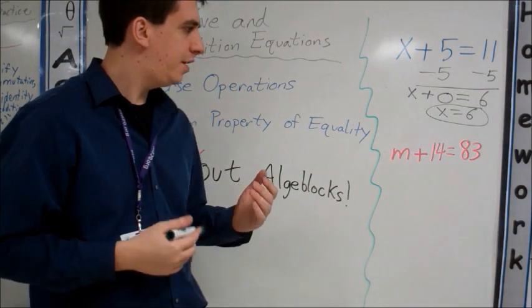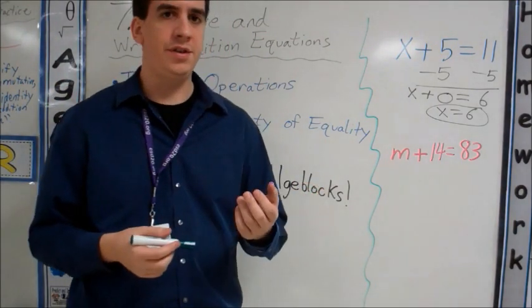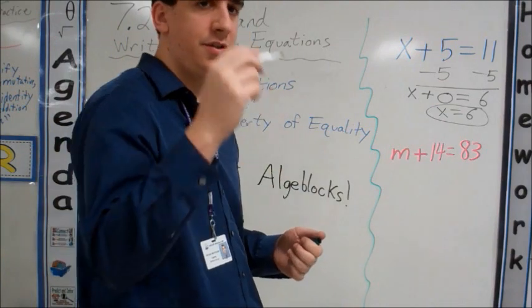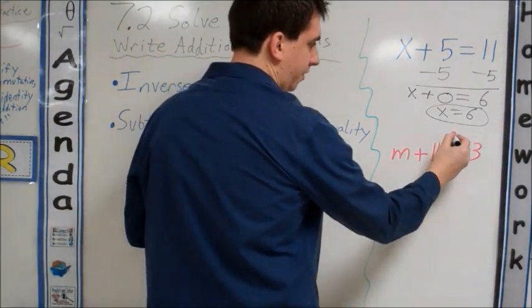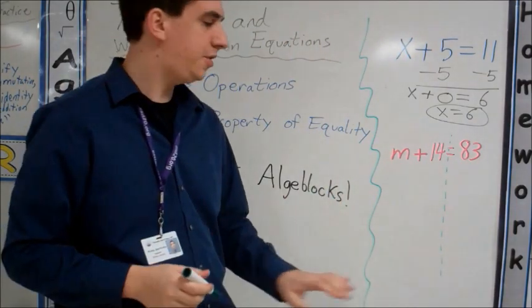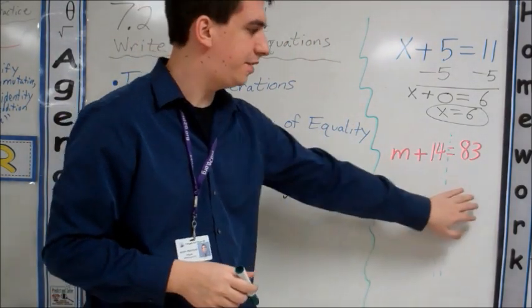Sometimes students say, well, where are both sides of the equation? One way to help you identify both sides of the equation is draw a dashed line vertically down the equal sign. Then we know for sure that this is the left side of the equation and this is the right side.